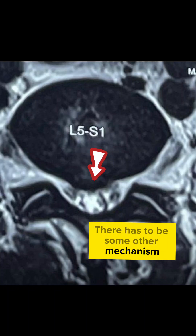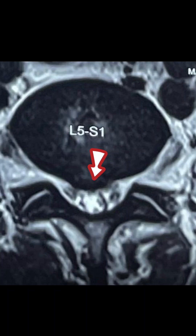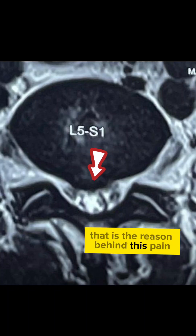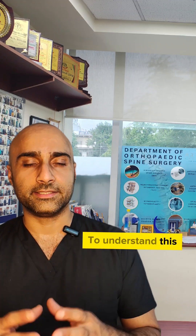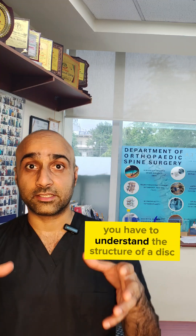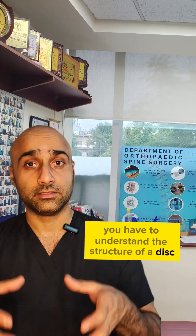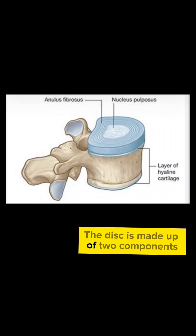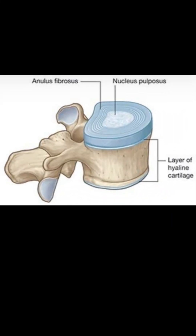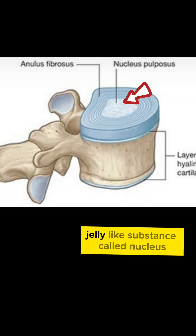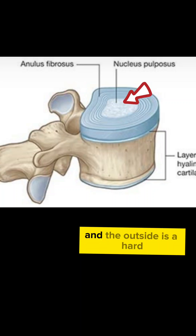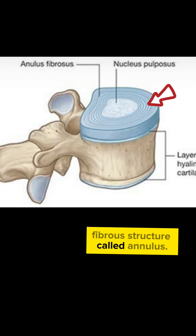So there has to be some other mechanism that is the reason behind this pain going from our back to our leg. To understand this, you have to understand the structure of a disc. The disc is made up of two components: the inside component is a soft jelly-like substance called the nucleus, and the outside is a hard fibrous structure called the annulus.